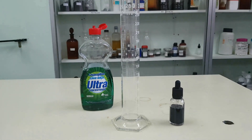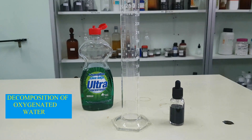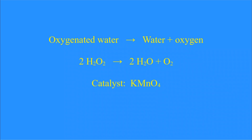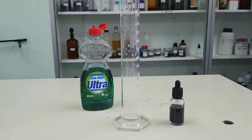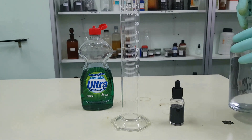Let's carry out a chemical reaction: the decomposition of hydrogen peroxide. This decomposition can be carried out spontaneously, or by heating, or by using a catalyst, such as potassium iodide or potassium permanganate.